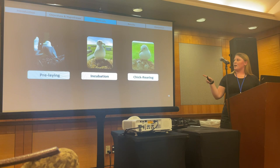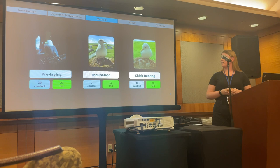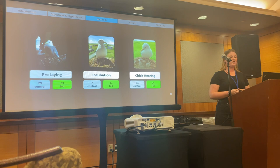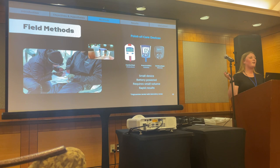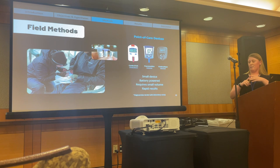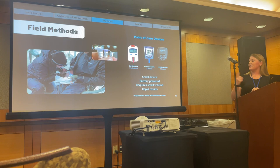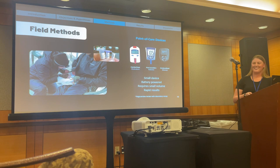We collected samples throughout the entire breeding season, obtaining 29 control and 23 fed samples during pre-laying, 7 control and 11 fed samples during incubation, and 34 control and 36 fed individuals during chick-rearing. At each sample we collected a small blood sample from the brachial vein in the wing, immediately tested with an array of point-of-care devices. These human health monitors have been validated for use in kittiwakes and are super handy in the field — small, battery-powered, requiring only tiny blood volumes and delivering instantaneous results.